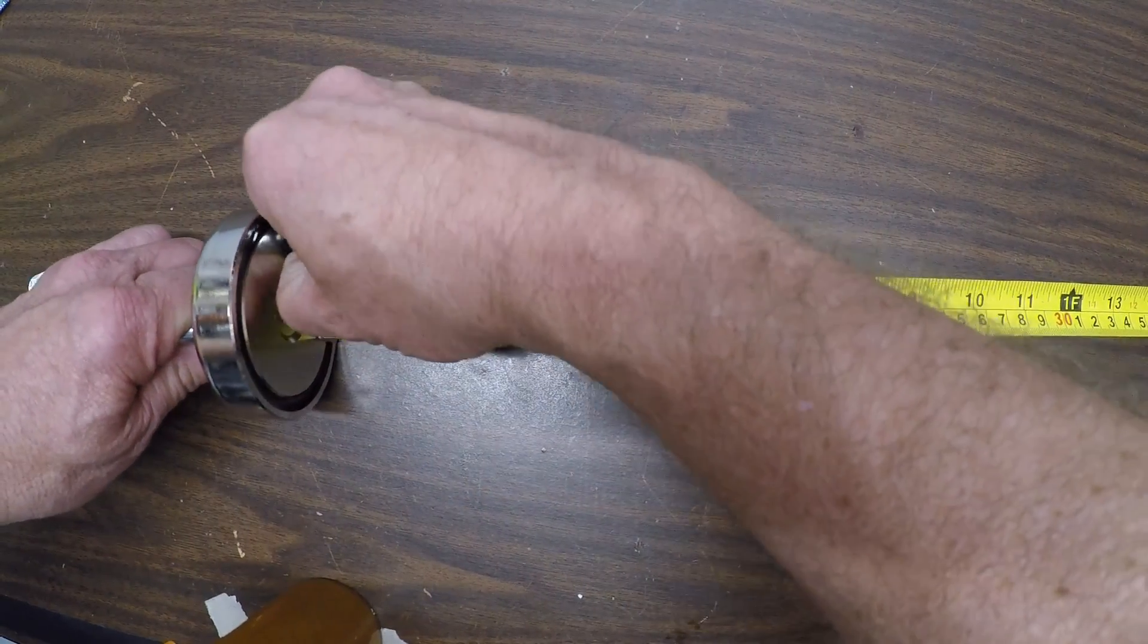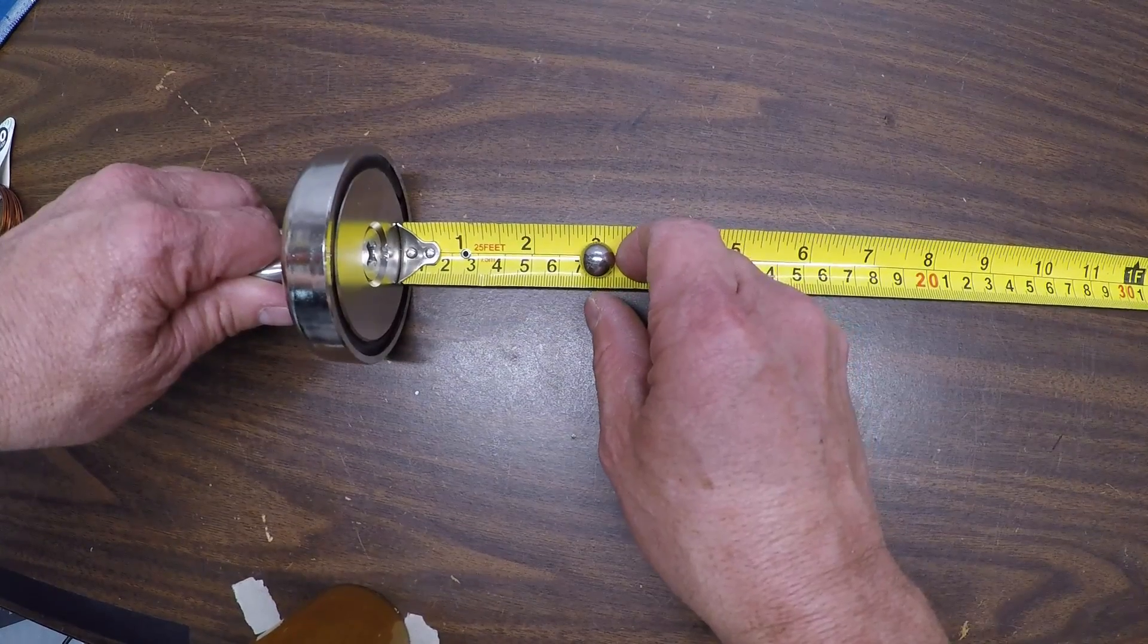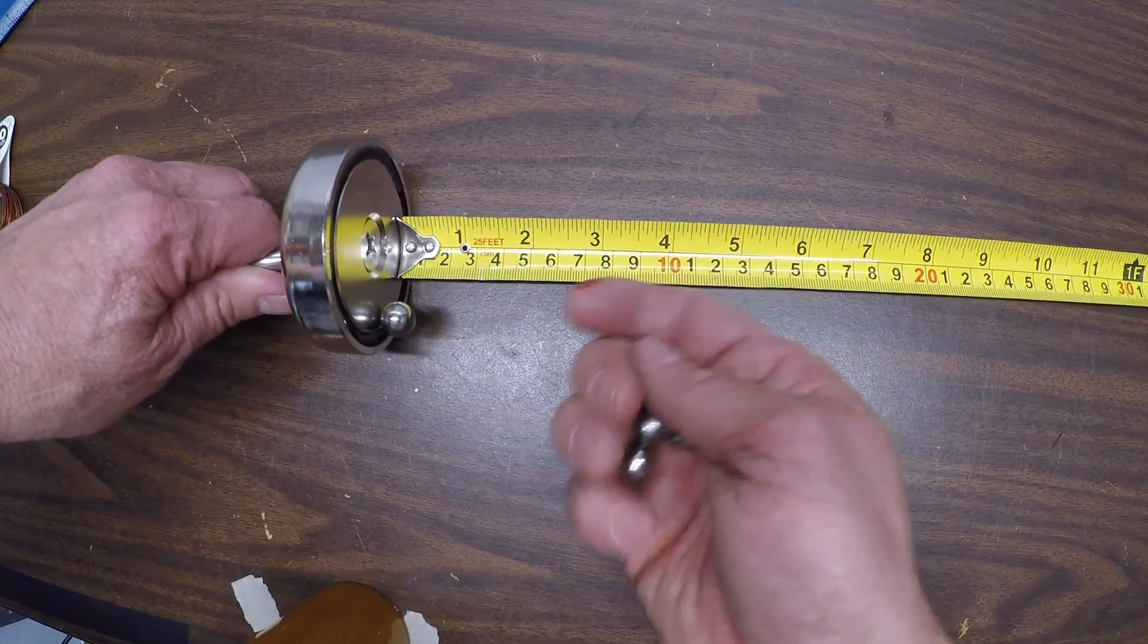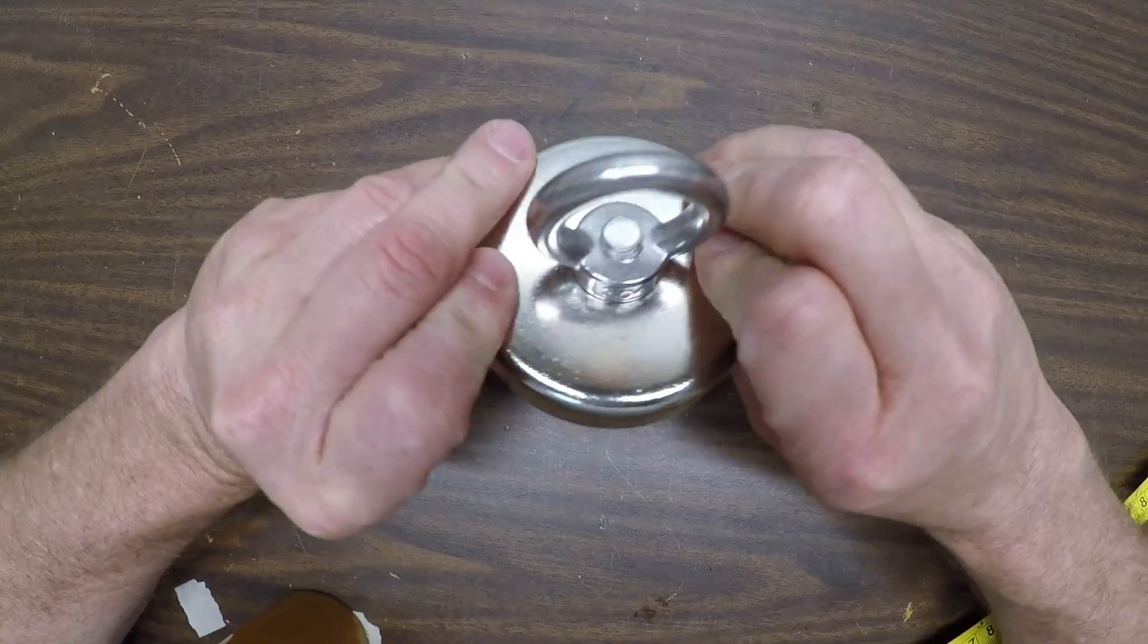Now we have a half inch ball bearing. Around three, there you go. First look at a three hundred and fifty pound neodymium magnet.